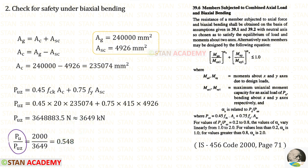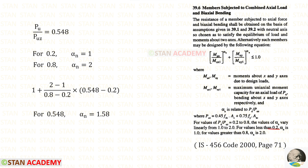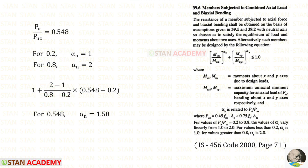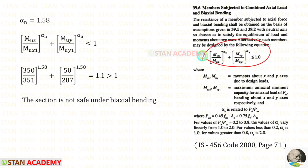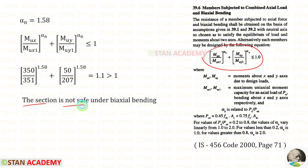For PU / PUZ = 0.548, we need to find α_n by interpolation between: at 0.2, α_n = 1, and at 0.8, α_n = 2. So α_n = 1 + (2 − 1) / (0.8 − 0.2) × (0.548 − 0.2) = 1.58. Substituting all values into the biaxial bending interaction equation, we get 1.1, which is greater than 1. The section does not satisfy this condition, so the section is not safe under biaxial bending.